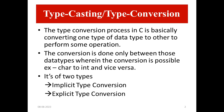The typecasting in C is basically converting one type of data type to another to perform some operation. The conversion is done only between those data types where the conversion is possible — for example, character to int and vice versa. There are two types of typecasting in C programming: implicit typecasting or explicit typecasting.